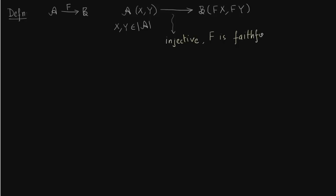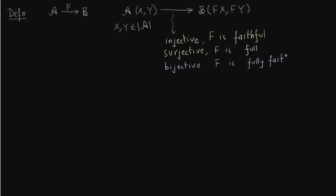If this map is surjective, then F is called full. If it is bijective, then F is called fully faithful. So the functor tries to match arrows in category A with arrows in category B obtained after applying F. If F is injective, the application of functor F could actually produce more arrows and objects than we started with.